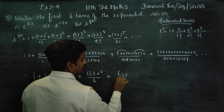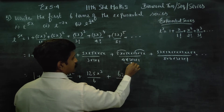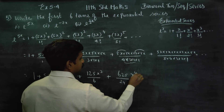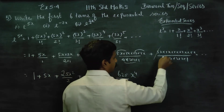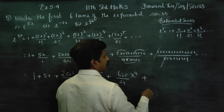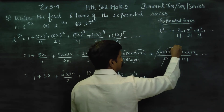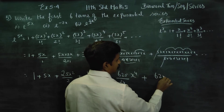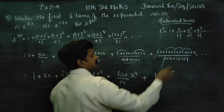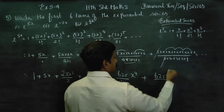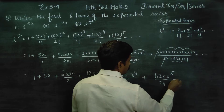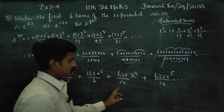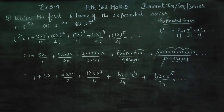625 by 24, giving 625x power 4 by 24. For the x power 5 term: 5 power 5 is 3125, by 5 factorial which is 120. So the 6 terms are complete. The final answer for e power 5x is: 1 plus 5x plus 25x square by 2 plus 125x cube by 6 plus 625x power 4 by 24 plus 3125x power 5 by 120, and it goes on. Proceeding to the second subdivision.